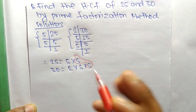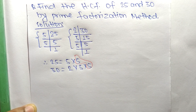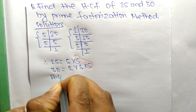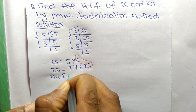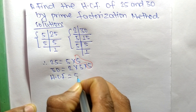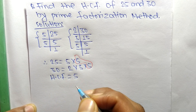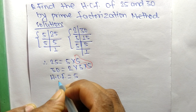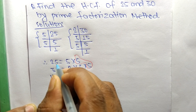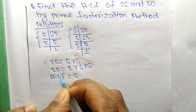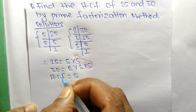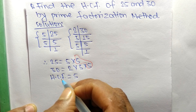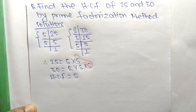The common factor here is 5, so the HCF is equal to 5. Therefore, 5 is the HCF of 25 and 30. That's all for today, thanks for watching.